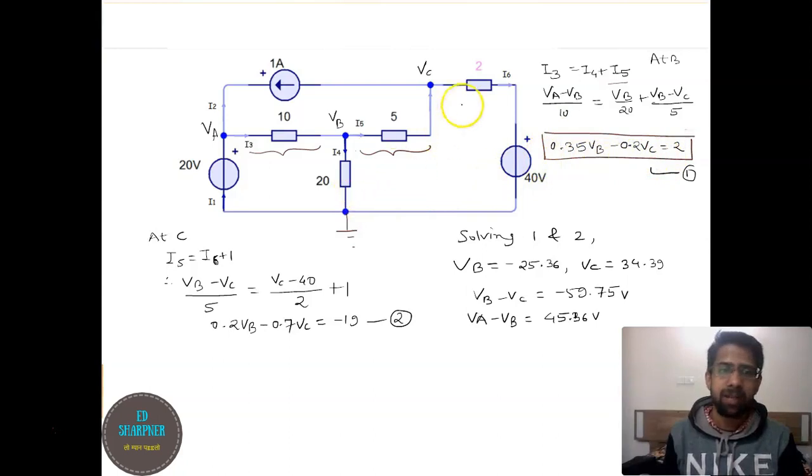Similarly, if you apply the nodal analysis at VC or at C, we have I5 equals I6, or I5 equals I6 plus 1 ampere, which is the current going in this direction.